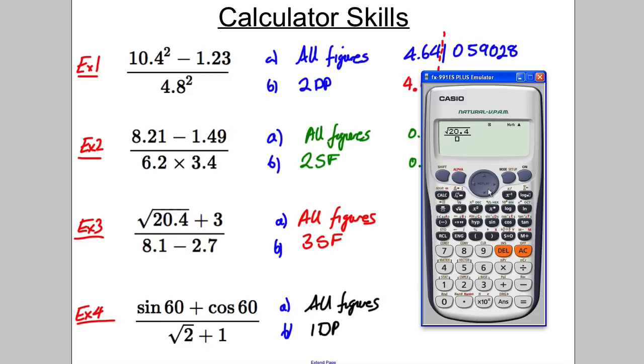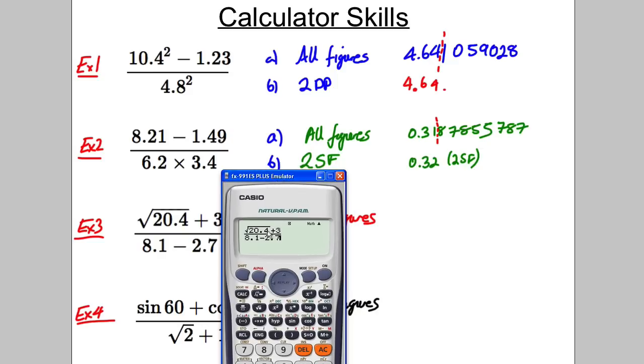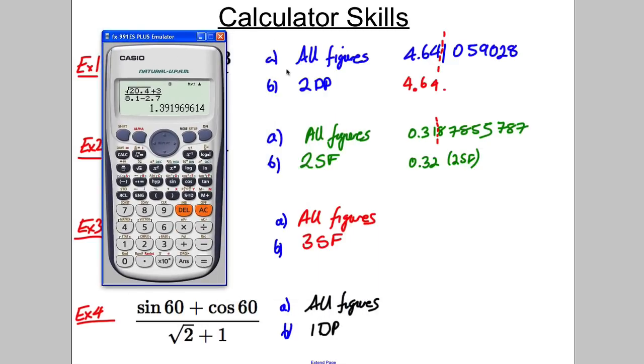So in order to avoid that, you have to come out of the square root by pressing the side button. And then, plus 3, down 8.1, take away 2.7. And check it like that, it looks like that. Now it's very important you realise that that 3 is not under the square root.